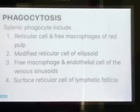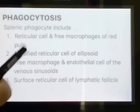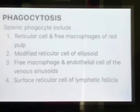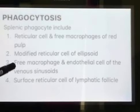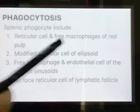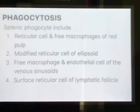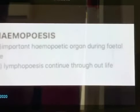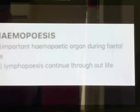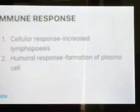Discussing the functions of the spleen: first, splenic phagocytosis — the spleen is an important component of the reticuloendothelial system, which includes splenic phagocytes, reticular cells and free macrophages of the red pulp, modified reticuloendothelial cells of the ellipsoids, free macrophages and endothelial cells of venous sinusoids, and surface reticular cells of lymphatic follicles. Next, hemopoiesis — the spleen is an important hemopoietic organ during fetal life, while lymphopoiesis continues throughout life. Next is the immune response: cellular response is given by increased lymphopoiesis and humoral response by formation of plasma cells. Finally, the spleen can store RBCs and release them into circulation when needed.